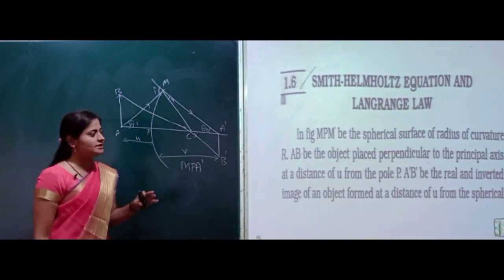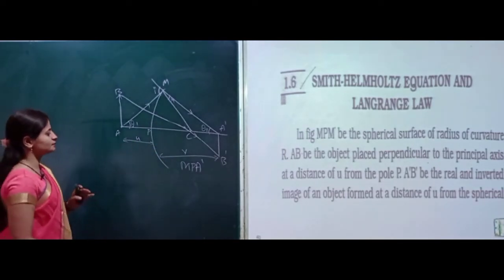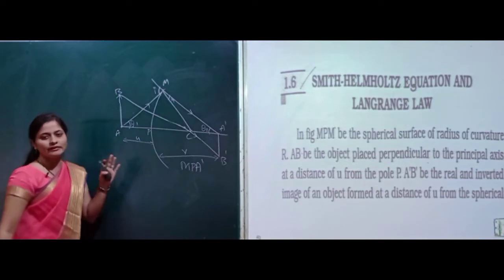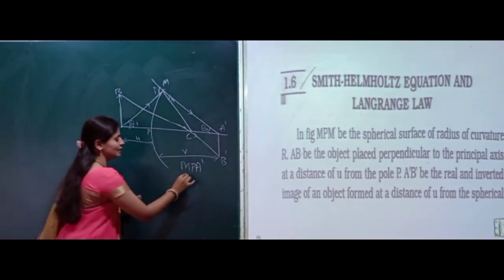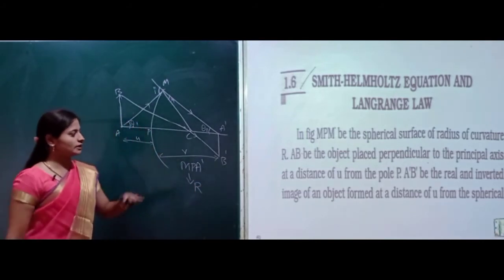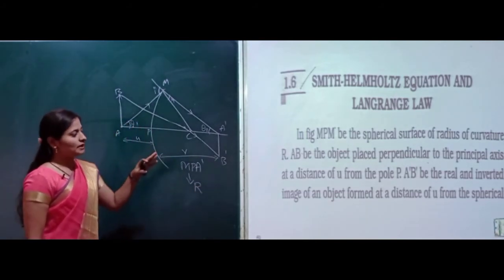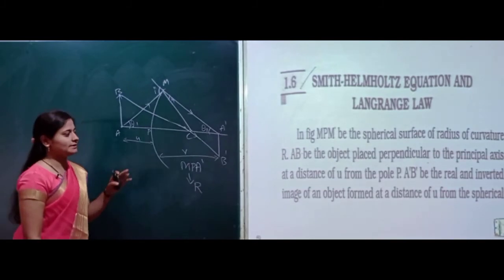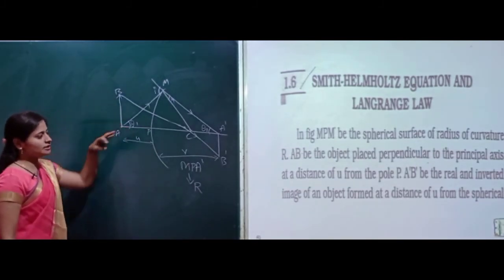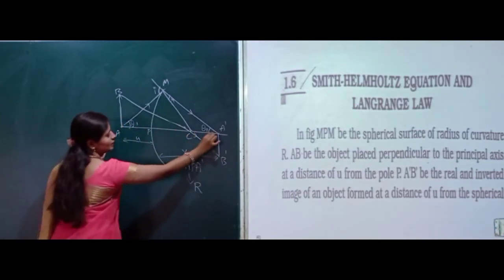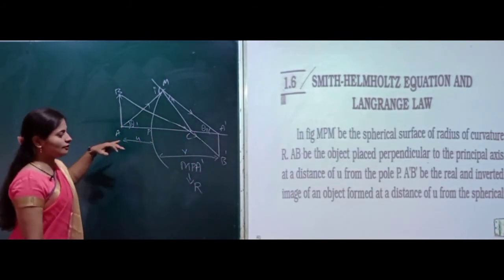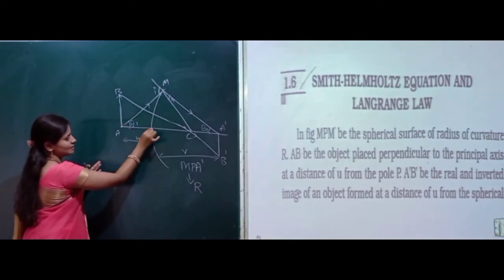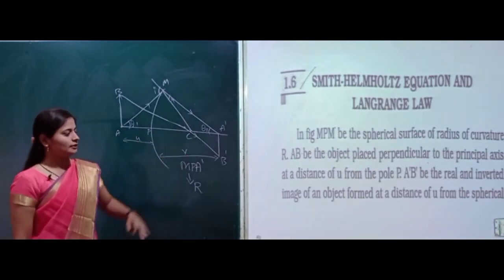Let the spherical surface M, P, M dash have a radius of curvature capital R. This is one spherical surface having one radius of curvature that is capital R. Next, A, B is the object placed perpendicular to the principal axis at a distance of u from the point P.